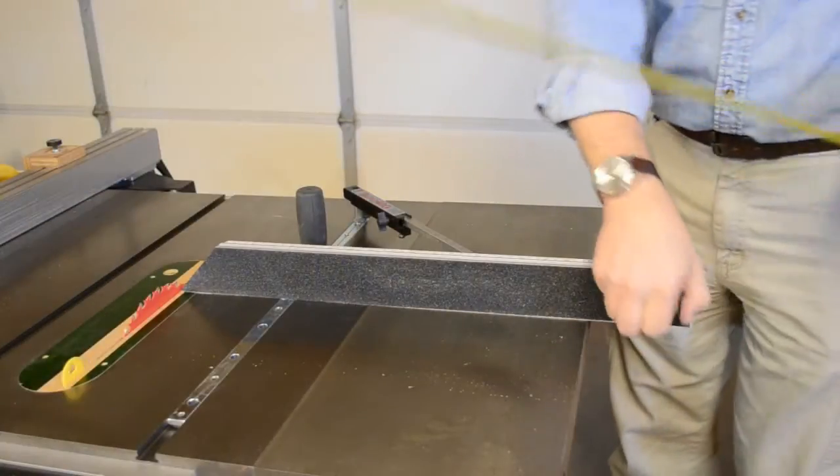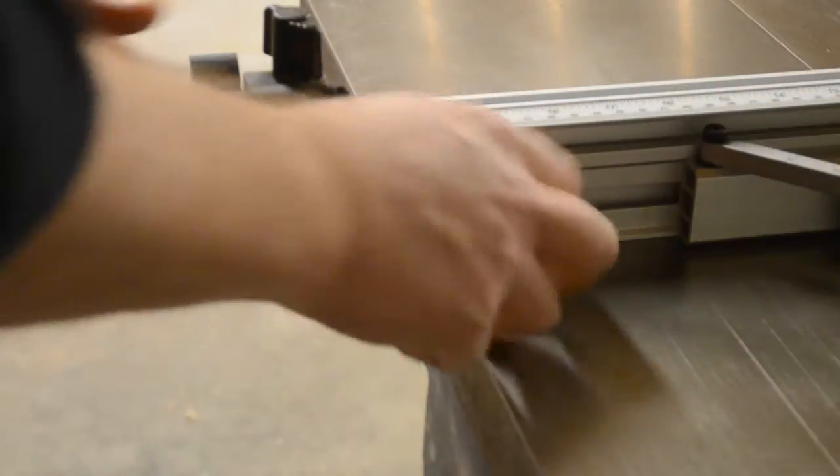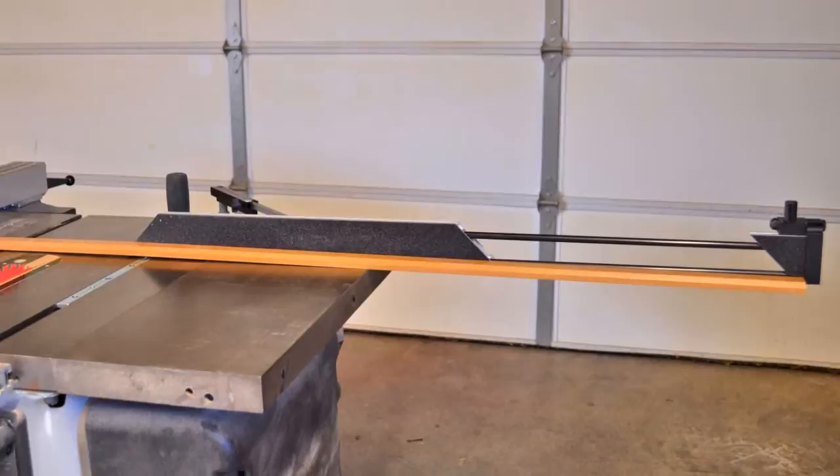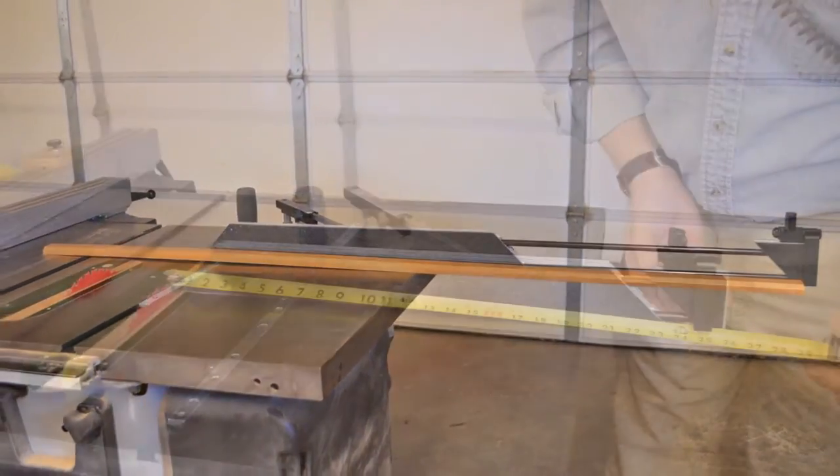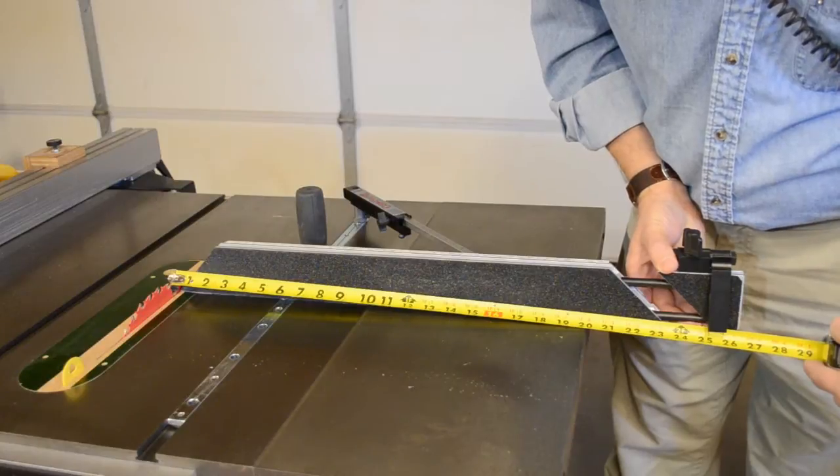The fence extension can telescope out of the main fence, allowing the flip stop to be used on longer pieces. As much as 46 inches on some saws with the body and the fence extension all the way to the left. Simply loosen the clamp knob and slide the extension out to the desired distance.